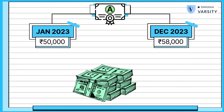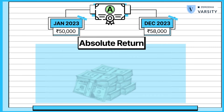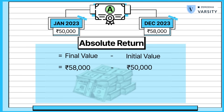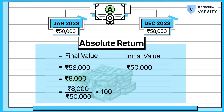So what do you think is the return on this investment? Well, the calculation is fairly simple. To calculate the return, you take the difference between the ending value which is 58,000 and the starting value which is 50,000, divide this difference by the starting value of 50,000, and multiply the resulting number by 100. So in this case it is 8,000 divided by 50,000 multiplied by 100. When you do this math you get 16% as the return.